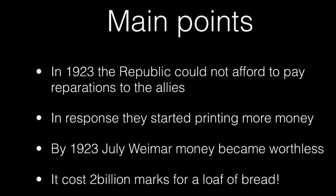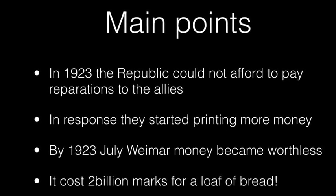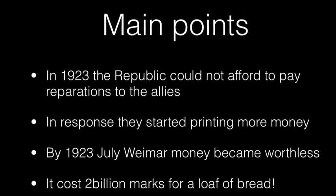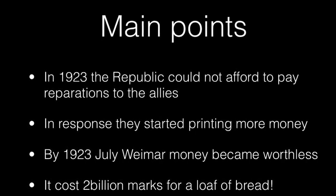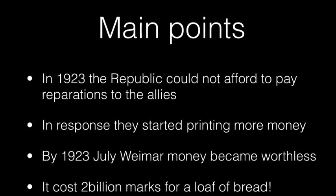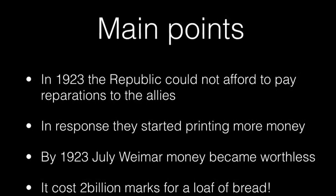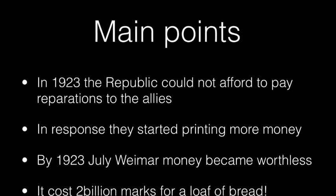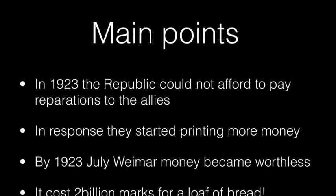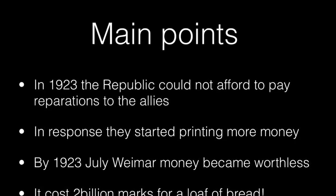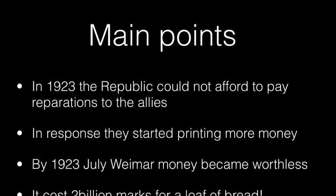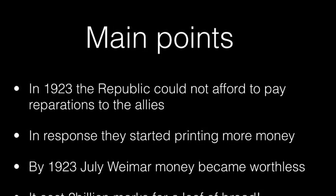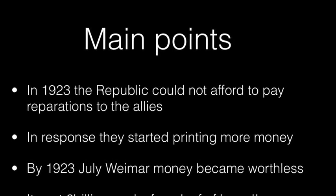So what are the main points? In 1923 the Republic could not afford to pay reparations to the Allies. They were scared in case the French and the Belgians might invade, so what they did was start to print more money and pay off the reparations like that. But by 1923 the economy had completely collapsed and German money was worthless. The main example is that it cost 2 billion German marks for just a loaf of bread.